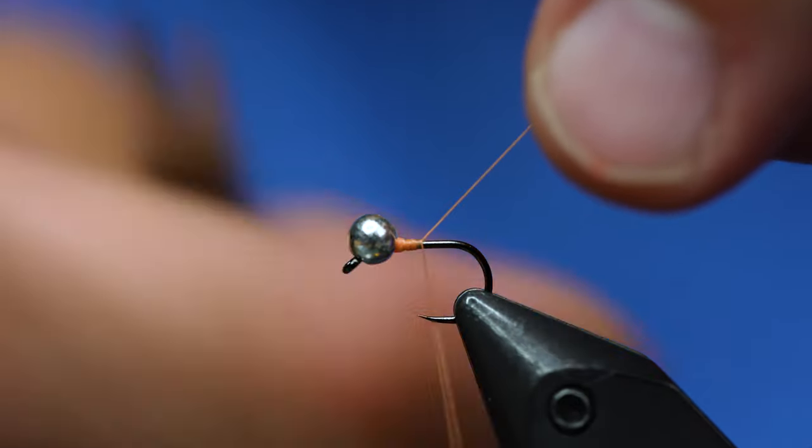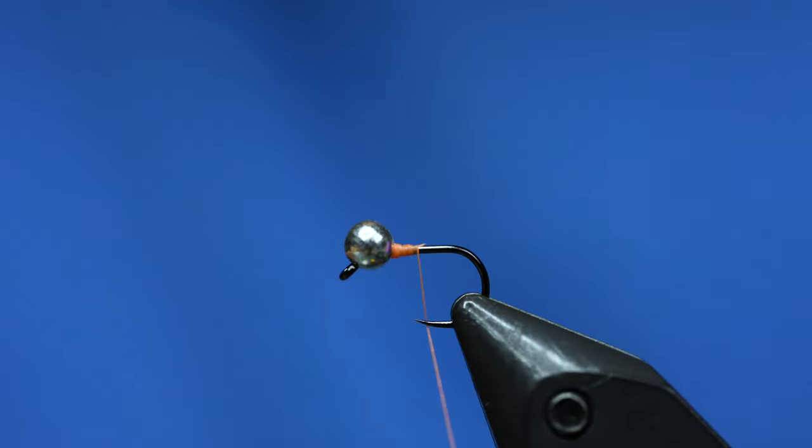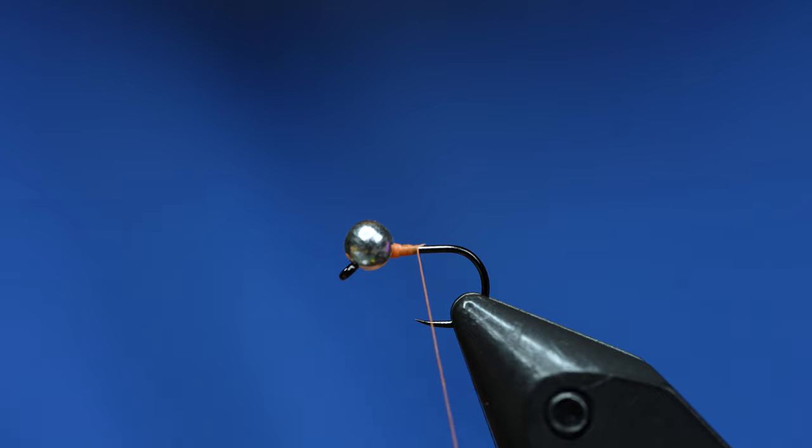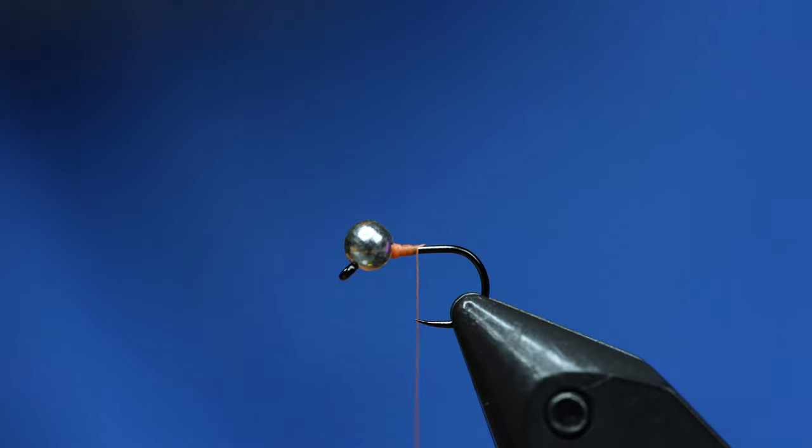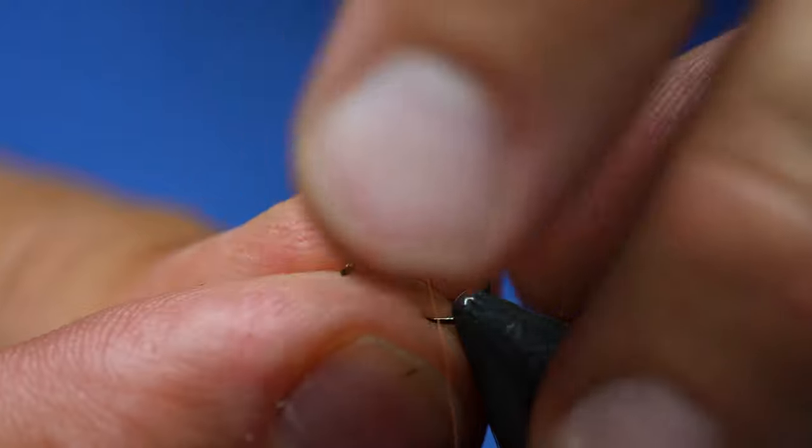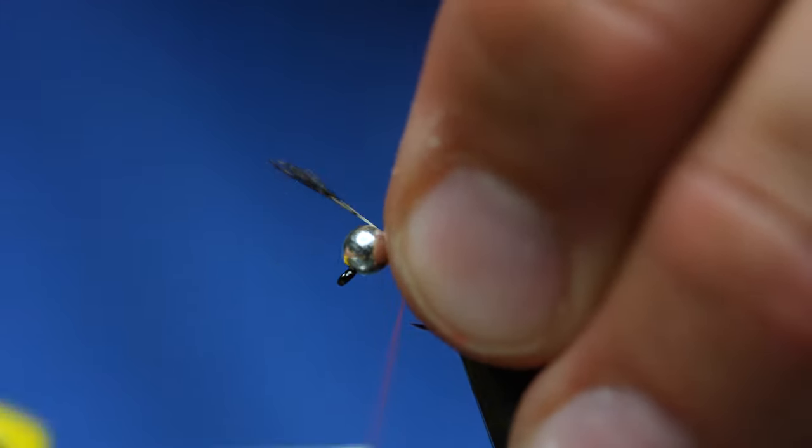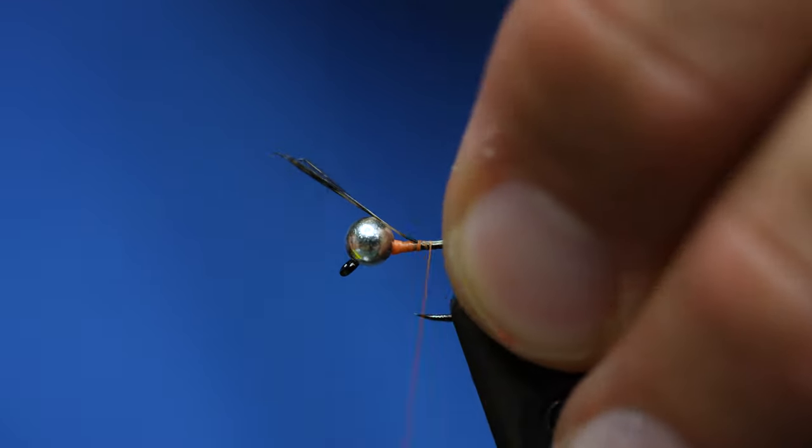Alright, so once that's in I'm going to do my standard Euro tail. Coq de Leon. Alright. So a few little tails. We are going to tie those in.